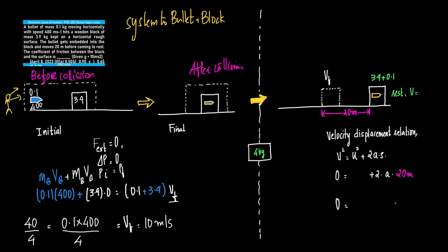Now that we have the final velocity of 10 m/s, we move to the second part of the problem. After the collision, the bullet is embedded in the block and the system moves 20 cm before coming to rest. So for the motion along A to B, the final velocity is zero.